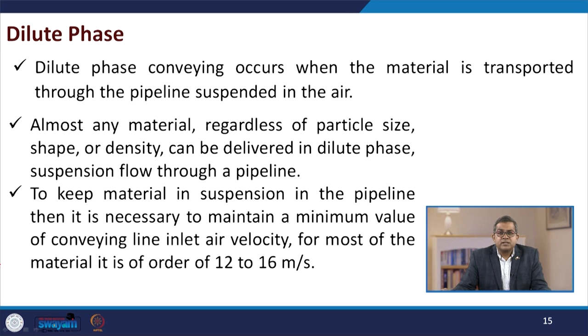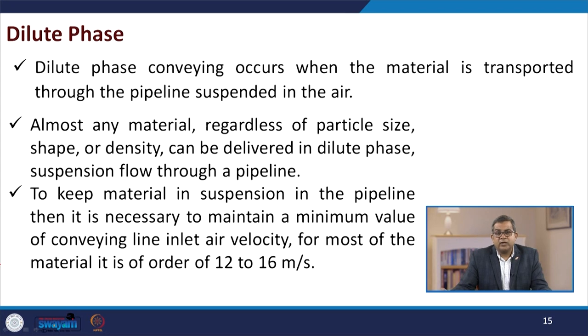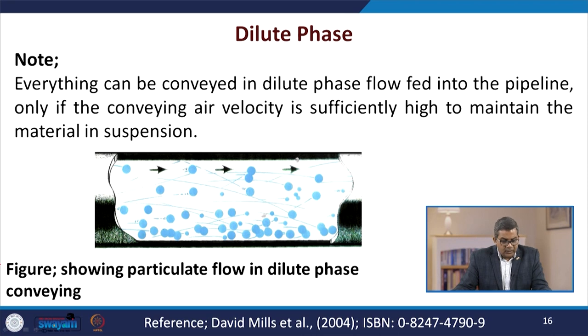Dilute phase conveying occurs when the material is transported through a pipeline suspended in the air. Almost any material, regardless of particle size, shape, or density, can be delivered in dilute phase suspension flow through a pipeline. To keep material in suspension, it is necessary to maintain a minimum conveying line inlet air velocity — for most materials, this is on the order of 12 to 16 meters per second. Everything can be conveyed in dilute phase if the conveying air velocity is sufficiently high to maintain the material in suspension.